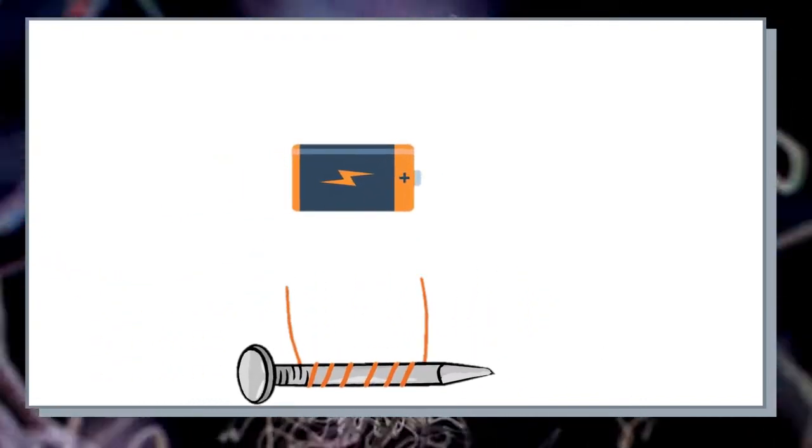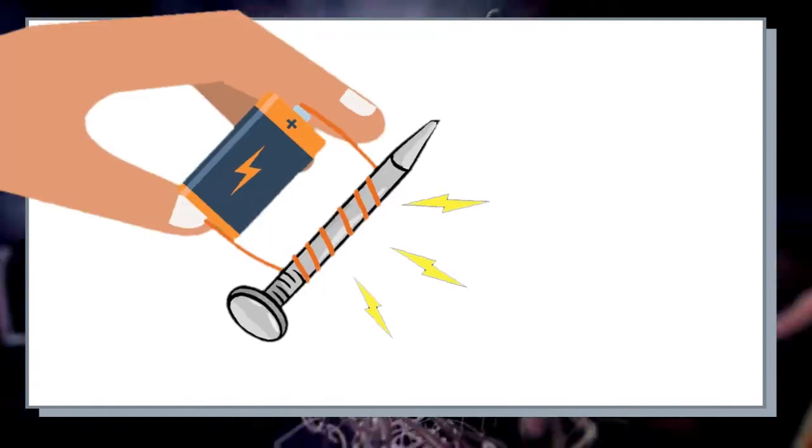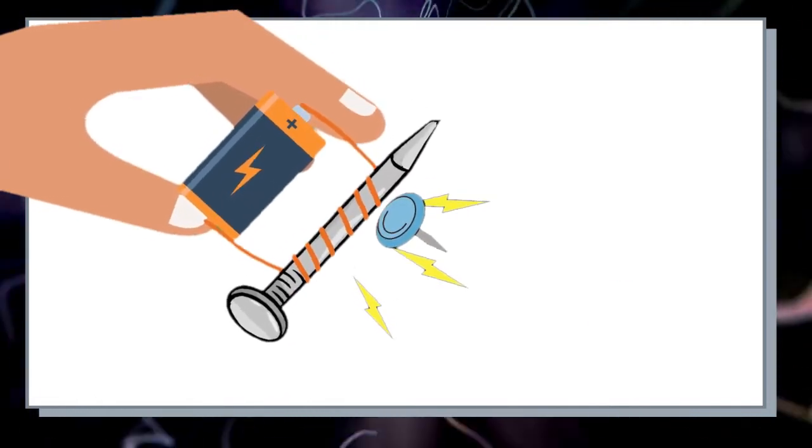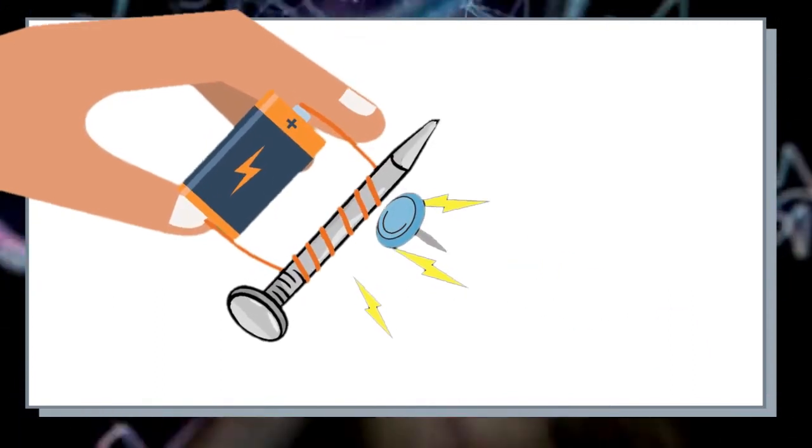An electromagnet is a device made temporarily magnet by flowing an electricity through a coil of wire wrapped around an iron nail.